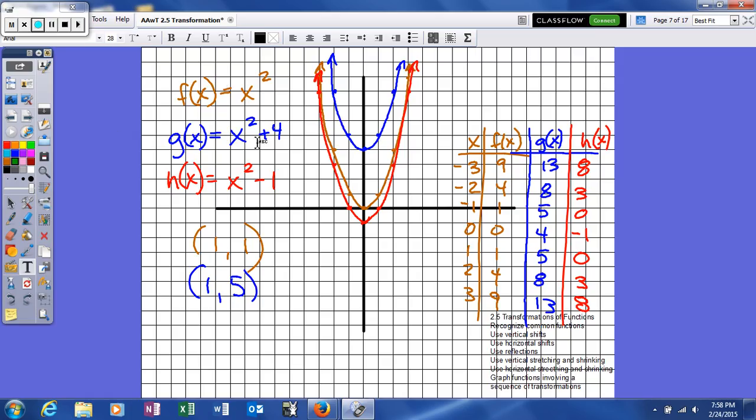Well, in g of x, what we're doing is we're squaring them, and then we're adding 4. So when you square negative 3 and add 4, you get 13, here you'll get 8. Negative 1 will give you 5. And if you notice when we graph those for the blue function, what it's basically done is it's taken our brown function and moved everything up 4.